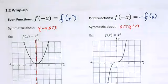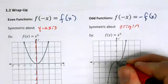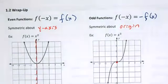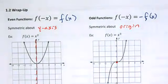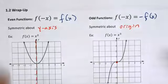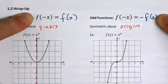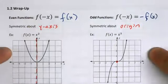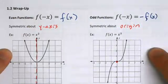Symmetry about the origin relates to rotational symmetry from geometry. If you rotate the figure 180 degrees — flip it upside down — it looks exactly the same. Odd functions have that type of symmetry. I want us to make a connection between the rule and the symmetry.